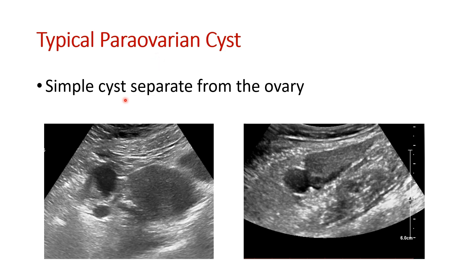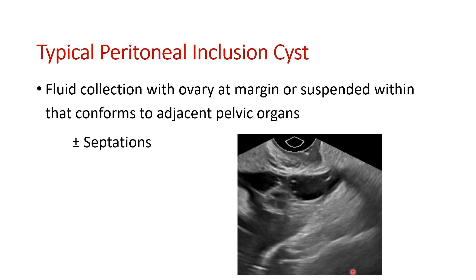Parovarian cysts should be separate from, but nearby, the ovary. Here you can see the ovary, and outside of it are two parovarian cysts — these are typical parovarian cysts. Typical peritoneal inclusion cysts are fluid collections with the ovary at the margin. This shows a partial volume of the left ovary and a cystic component in the peritoneum with septations — this is a peritoneal inclusion cyst.